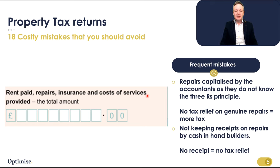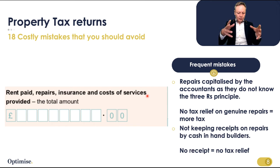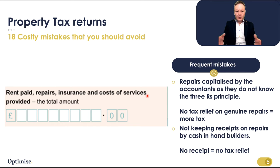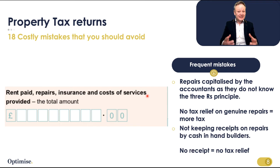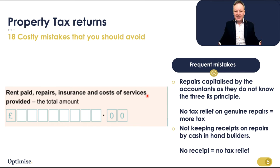The other issue is using generic accountants who are not property tax specialists. They'll read the tax law and say certain repairs are capital. But they need to read the property pages — the PIM, not just the BIM — to understand whether an item is legitimately capital or should be classified as a replacement item, which is offset against your income and gives you a tax allowance. Some accountants only look at the BIM rather than the PIM, which is just HMRC legislation. Ultimately, if you are not claiming for legitimate items, you will be paying more tax.